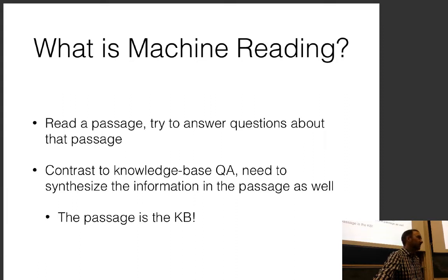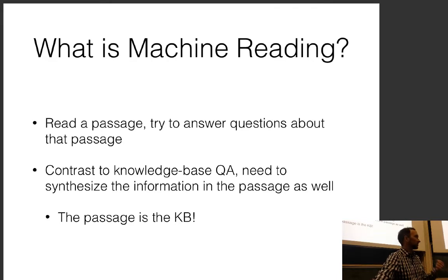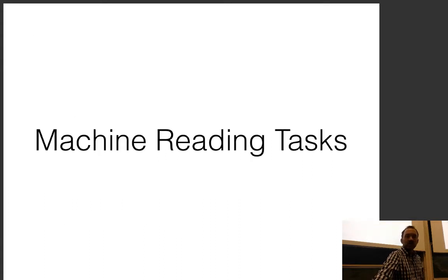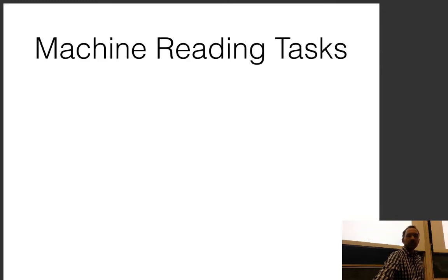I talked a little bit about open information extraction before, where you wanted to extract information from passages. If you did that and accessed the knowledge base extracted from the passage, you could do QA with the methods discussed so far. But most of the methods I'm going to talk about this time are not going to work that way — rather, they're based on matching surface-level cues in the text. There are several different ways to formulate machine reading tasks, and which formulation you choose will dictate which methods you can use.